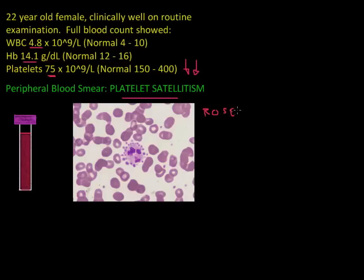The question is: what causes this and does it matter? If we look at the way the blood was drawn, it was taken in a tube containing EDTA. Tubes containing EDTA, as mentioned in some of my other screencasts, usually have purple tops. It's important to note that EDTA is really the culprit here.